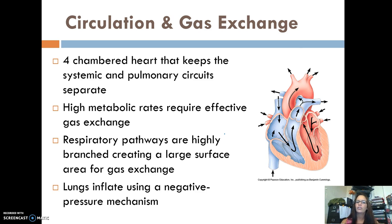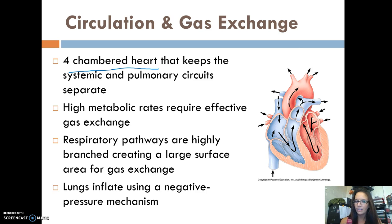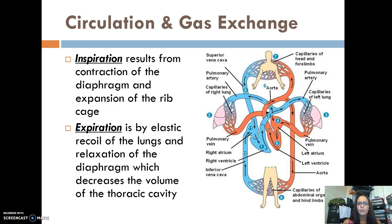For circulation and gas exchange, mammals have a four-chambered heart with two atria and two ventricles that keeps the systemic and pulmonary circuits separate. Those high metabolic rates require very effective gas exchange, so respiratory pathways are highly branched and create a large surface area for gas exchange. The lungs inflate and deflate using a negative pressure mechanism. Inspiration involves contraction of the diaphragm and expansion of the ribcage, while expiration is the recoil of the lungs as the diaphragm relaxes and the volume of the thoracic cavity decreases.